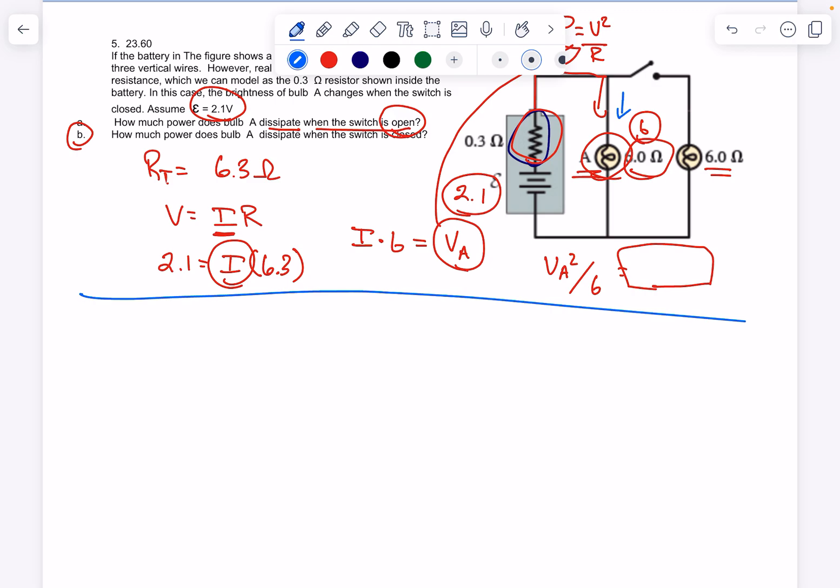This is a complex circuit because we have both series and parallel. The total resistance will be 0.3 plus 1 over 6 plus 1 over 6 to the minus 1, which equals 0.3 plus 2 over 6 to the minus 1, which is 0.3 plus 6 over 2 plus 3, equals 3.3 ohms.